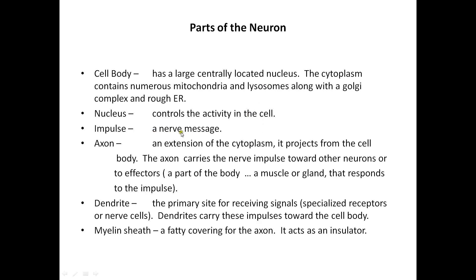The nerve message is the action potential that travels down the axon and through the end brushes and axon terminals. The axon is an extension of the cytoplasm that projects from the cell body and carries the nerve impulse toward other neurons or effectors. The dendrite is where the impulse is received; it carries impulses toward the cell body, where it is processed and then travels down the axon to the end brushes.